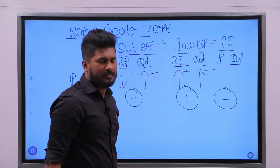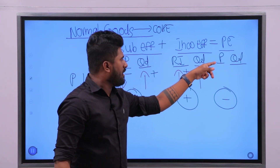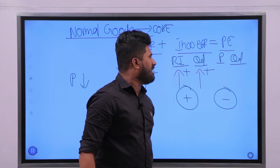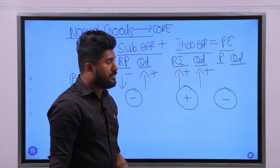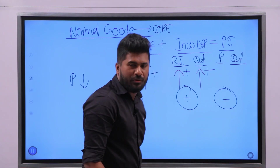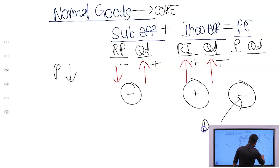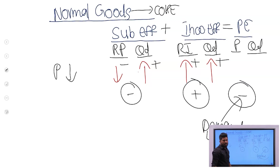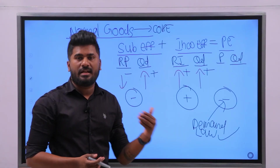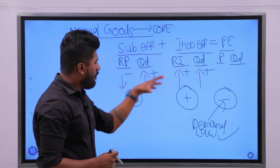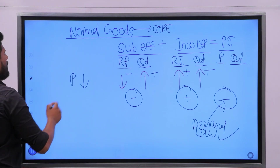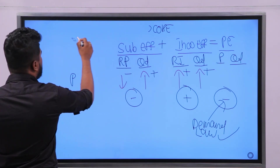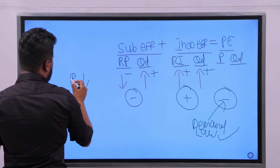There is a negative relationship between relative price and quantity demanded — so there is a negative substitute effect for normal goods. There is a positive income effect for normal goods. The price effect is the total of the substitute effect and income effect, so combining negative and positive, the price effect is negative. This means the relationship between price and quantity demanded is negative, which complies with the law of demand.